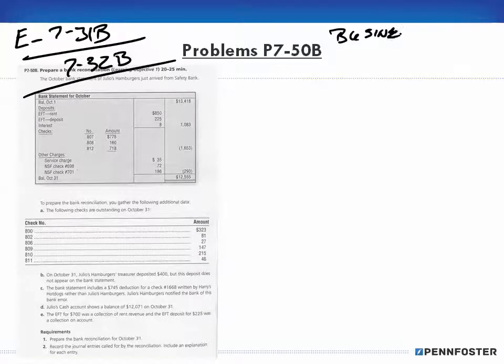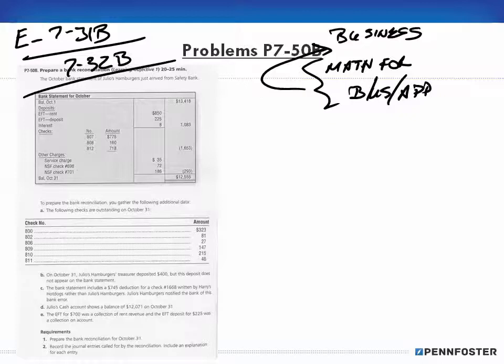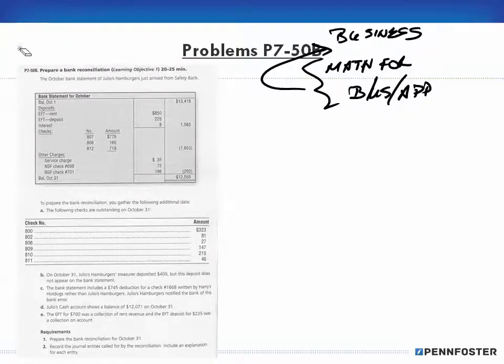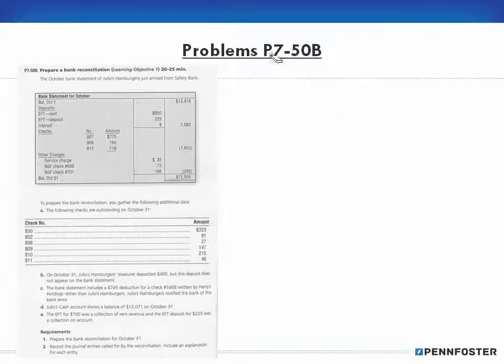Go back to the student community under the business group and the math for business applications. There's a section on the left-hand side under the business group that covers bank reconciliations extensively. That's where all the theory is. I present a little bit of theory for chapter 7 here, but I went extensively into bank reconciliations in the math for business application section under the business group. If you need to work on the theory, that's where you're going to find it.